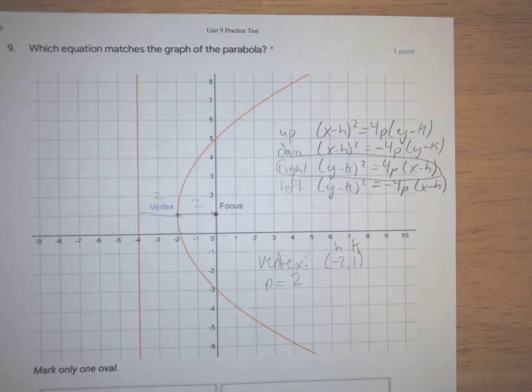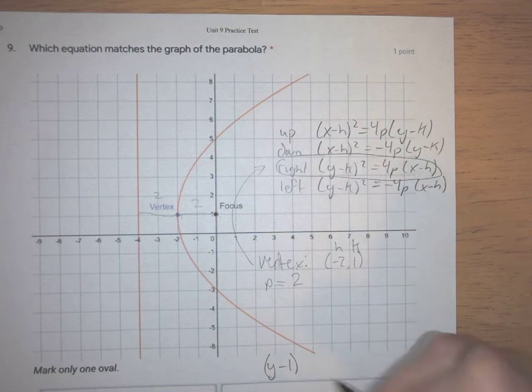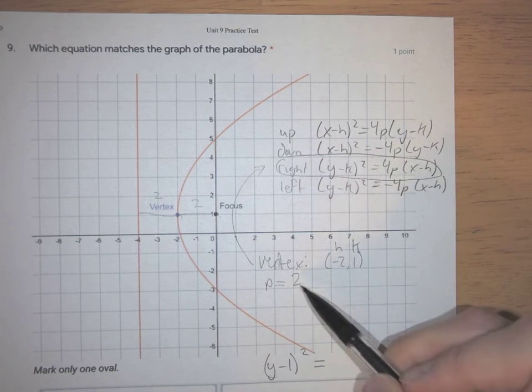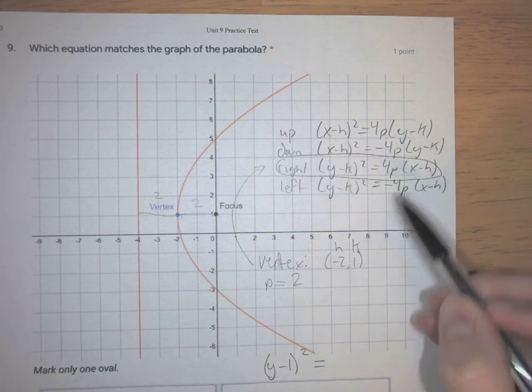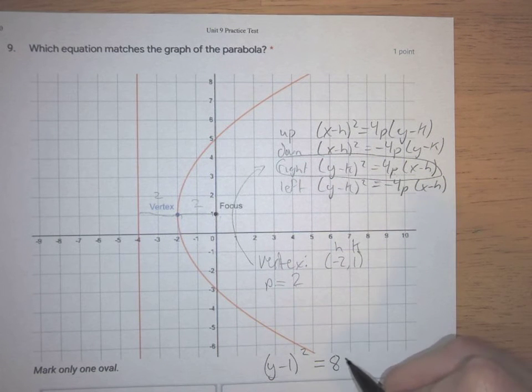So with those numbers, we just throw these into that equation and we're good to go. We have (y-k), which is (y-1)², equals 4p, but p now is 2, so we don't leave this as 4p, we replace that p. So 4 times 2 would be 8.